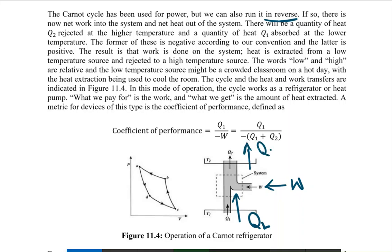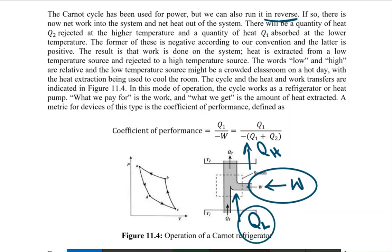In other words, if we supply work to the system, it would extract heat QL from the low temperature reservoir and reject heat QH to a high temperature reservoir. This is what we call reversing the Carnot cycle.